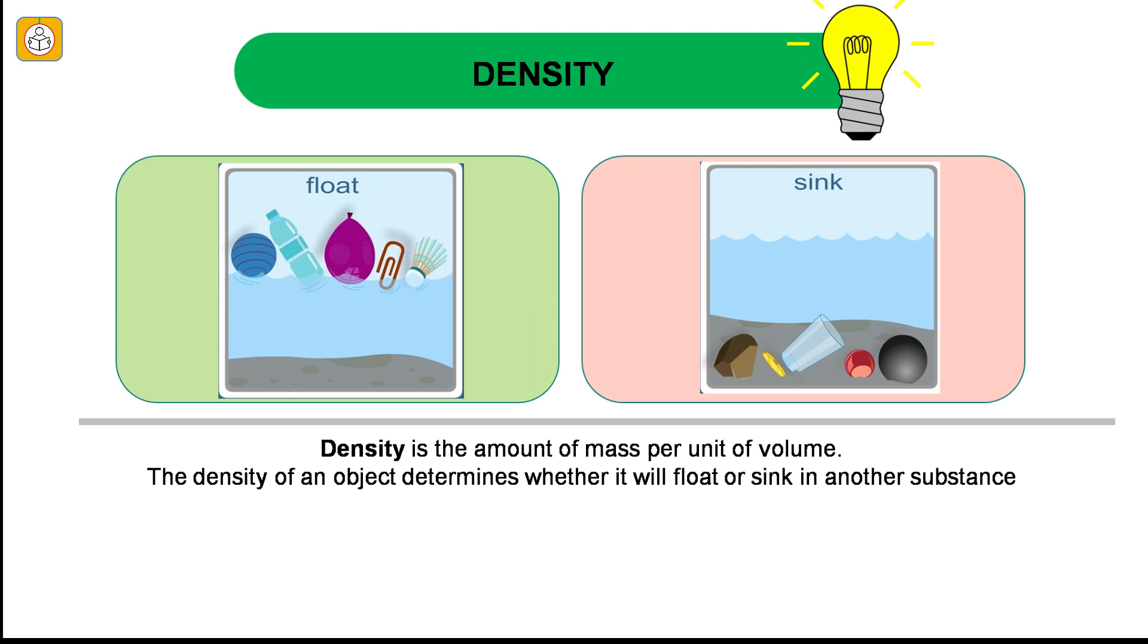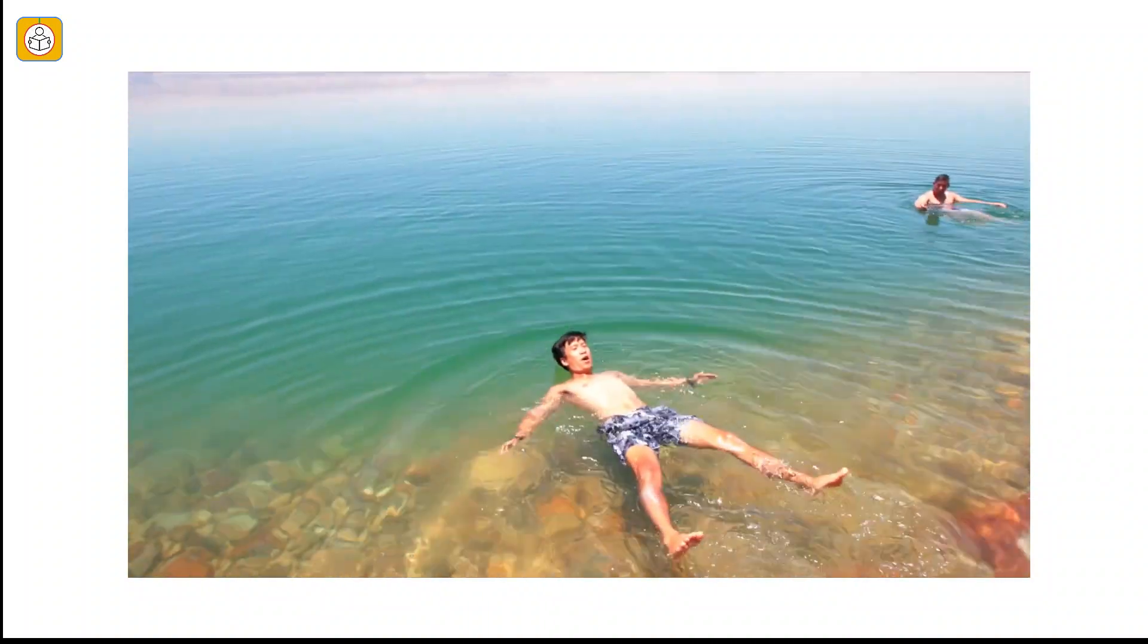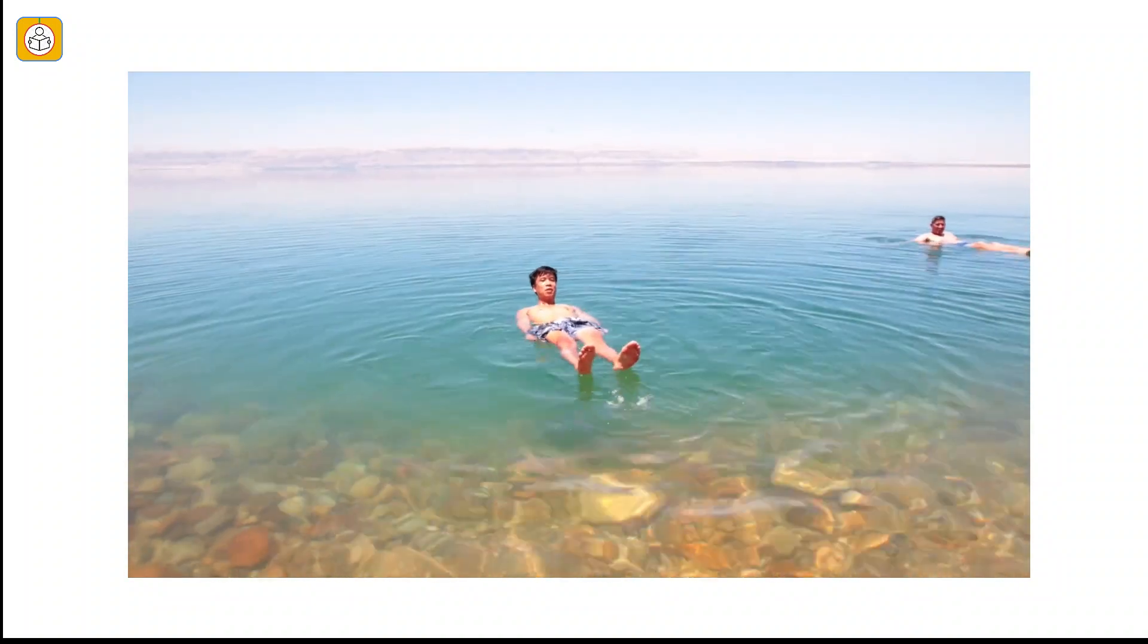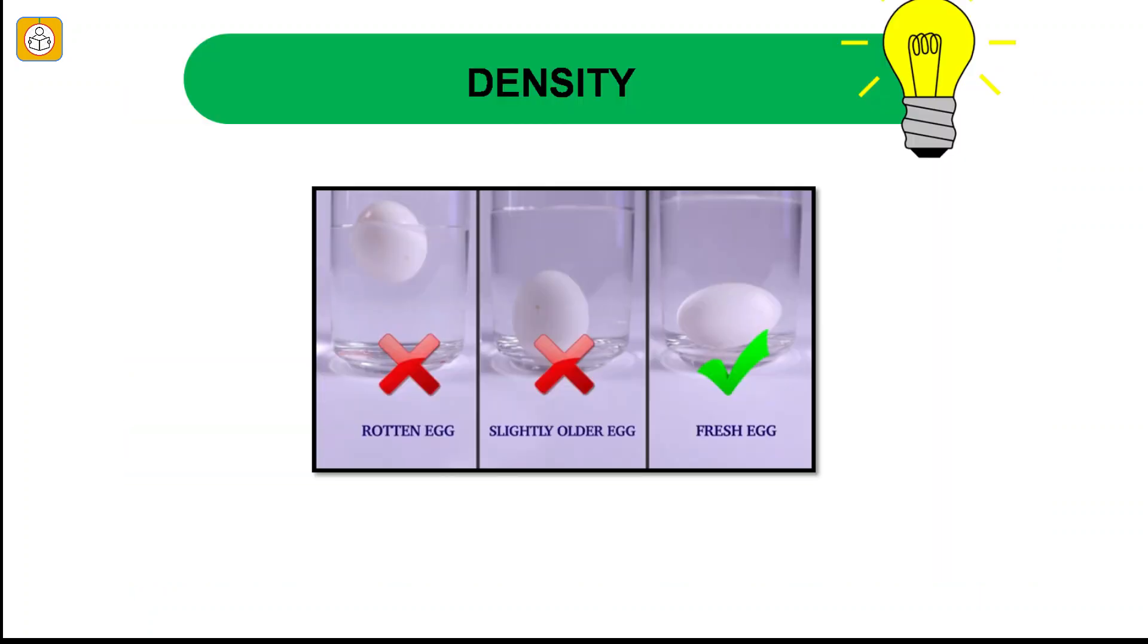Density is the amount of mass per unit of volume. The density of an object determines whether it will float or sink in another substance. The objects which are more denser than water will sink and the one lighter than water will float. The video shows humans floating on the surface of water without making any effort. Please write down in the comment section the name of the water body and why is it happening so. Float test is usually carried out to test the freshness of an egg. A fresh egg will always sink in water. Whereas a rotten egg floats on the surface of water.